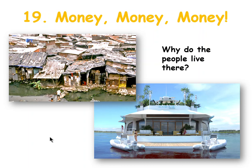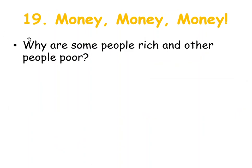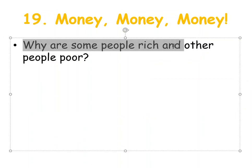First question: why are some people rich and other people poor? Well, some people are rich maybe because they live in a rich country, they have good education, they have rich parents maybe, or they work hard, they have a lot of possibilities.